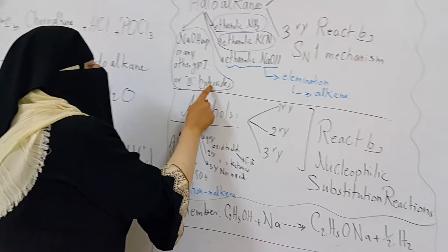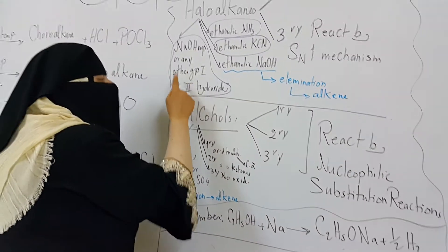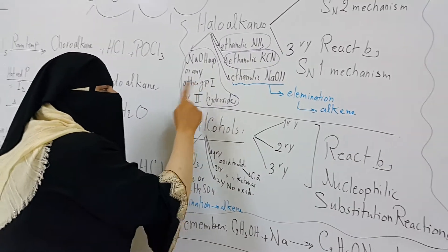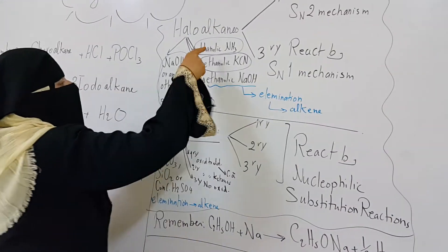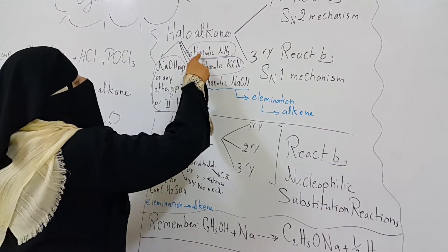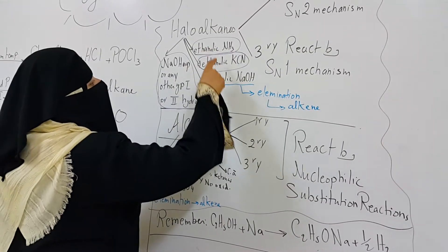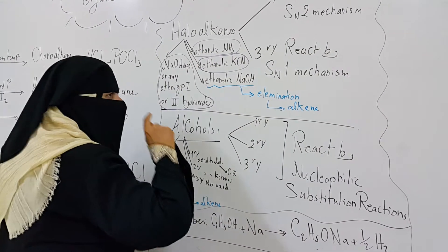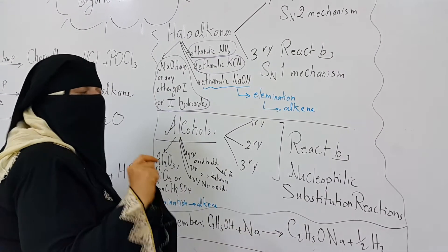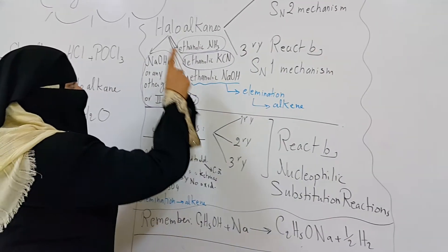Any group 1 or 2 hydroxide can perform nucleophilic substitution with halo-alkanes. They can also react with ethanolic ammonia and ethanolic potassium cyanide, also by nucleophilic substitution reaction.